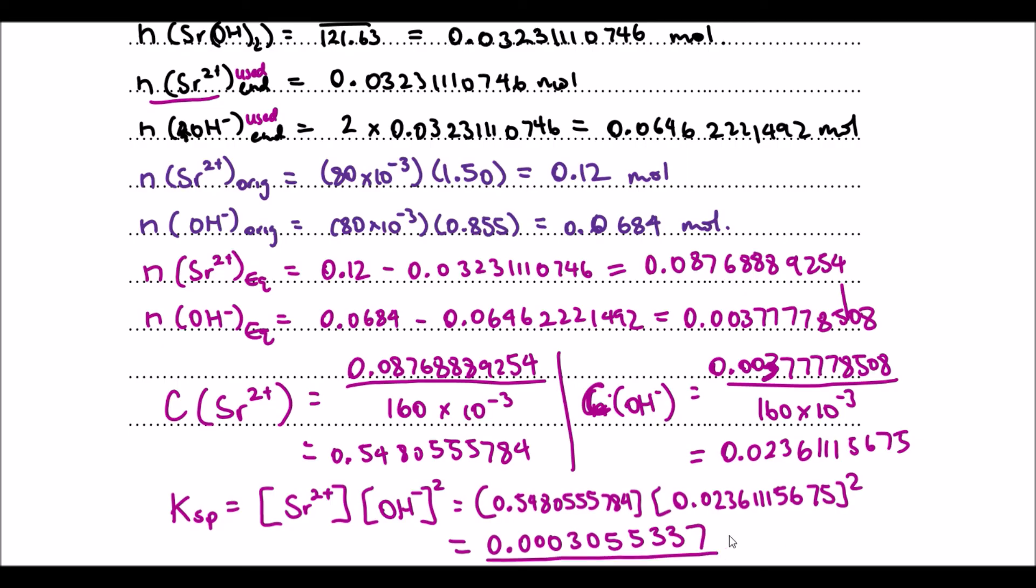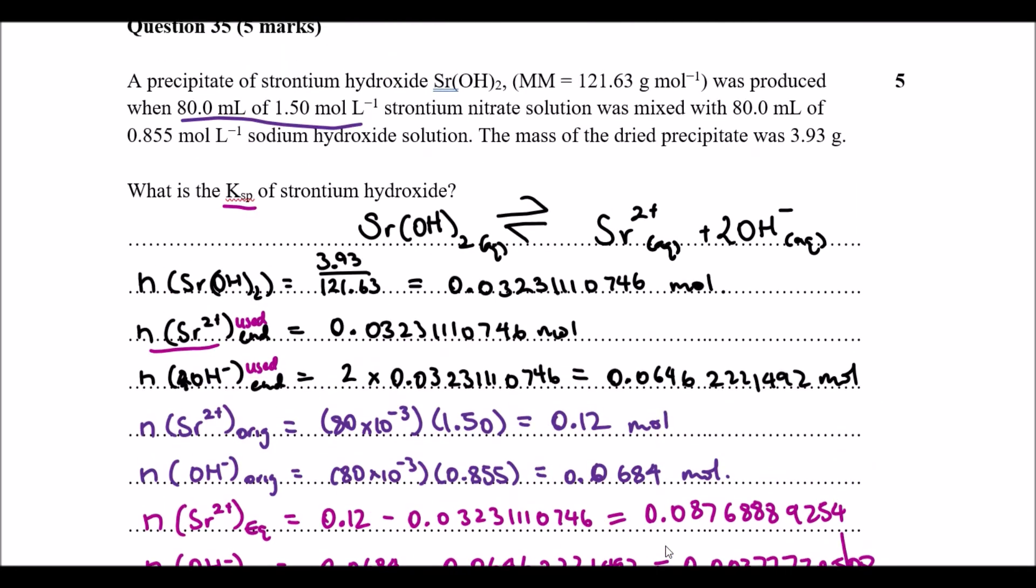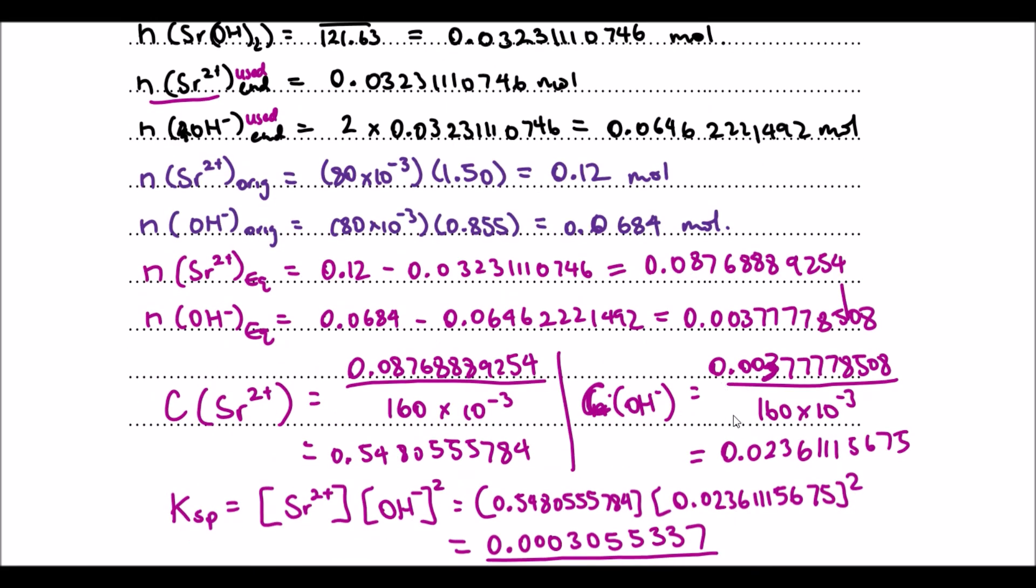The last bit is just to round our solution into the correct significant figures. If you have a look in each one, the lowest sig figs is actually three. So I'm going to round it off to three sig figs. And that's how you solve the problem.